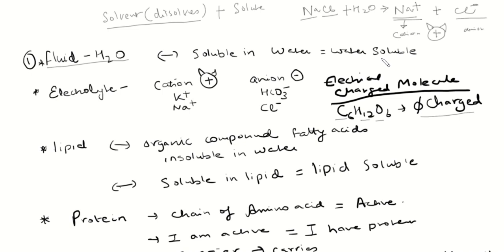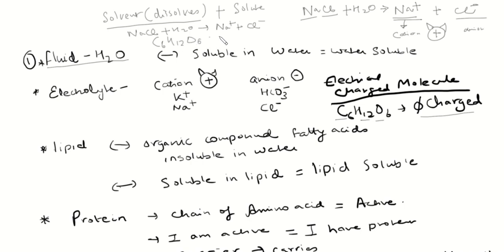Something interesting to notice: one molecule of salt, NaCl, which breaks down in water — how many particles does it give us? It gives us two particles. They're electrically charged, but they're particles. However, glucose gives us only one particle. Remember that — it's going to come in handy a little later.